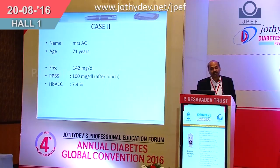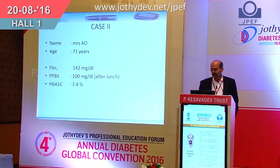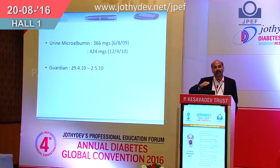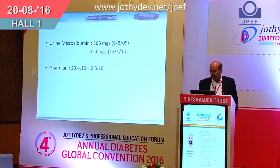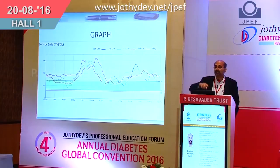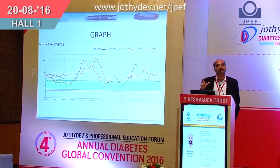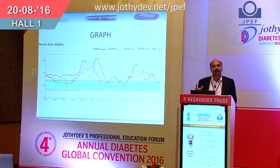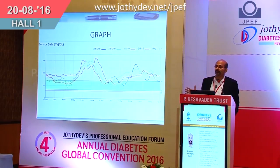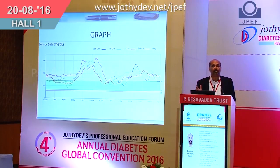Another patient had reasonably controlled sugars and HbA1c, but microalbuminuria was worsening. We performed the iPro CGM and found wide fluctuations. This confirmed that HbA1c can sometimes give you a wrong reading — a false sense of happiness that you are managing your patient well. It is just an average, and sometimes it may be misleading.